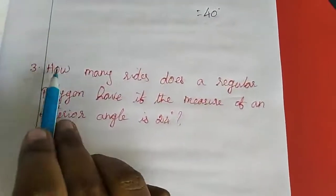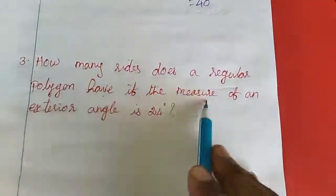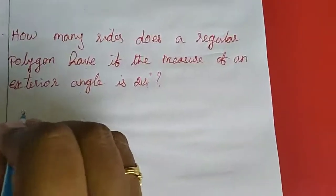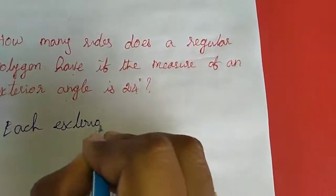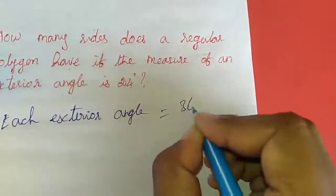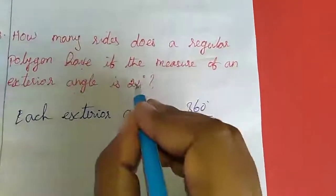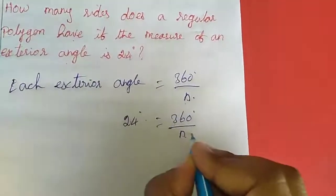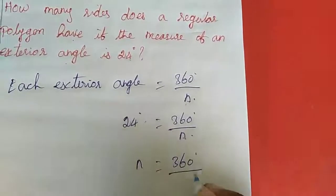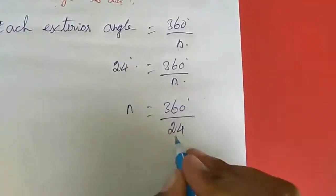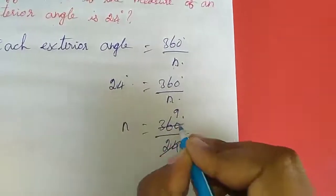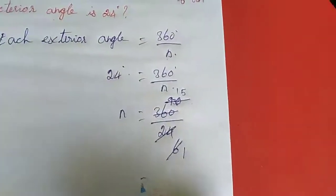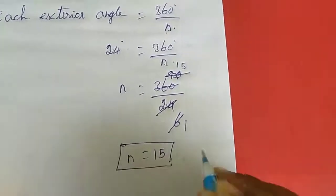Third sum: how many sides does a regular polygon have if the measure of each exterior angle is 24 degrees? For this we use each exterior angle equal to 360 degrees divided by n. We need to find n. So 24 degrees equals 360 divided by n, meaning n equals 360 divided by 24. The answer is 15 sides.